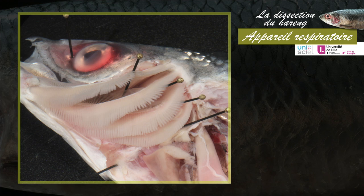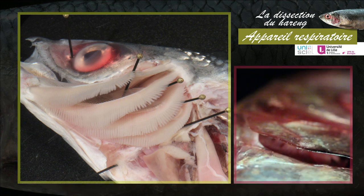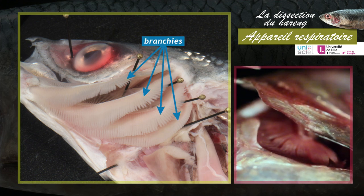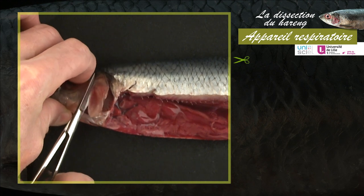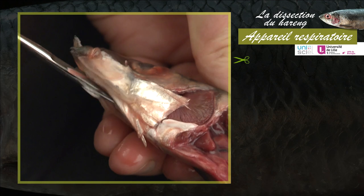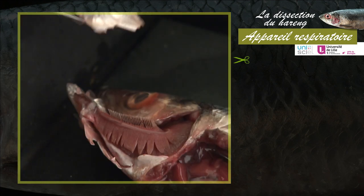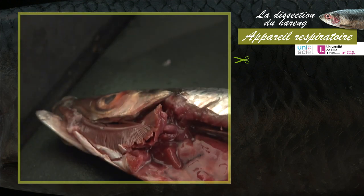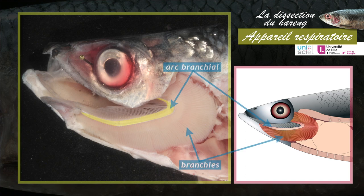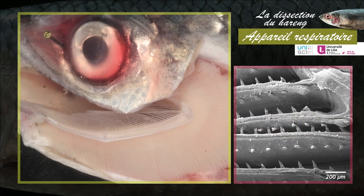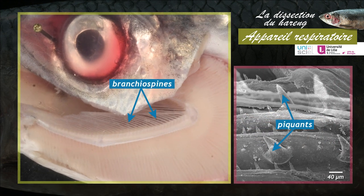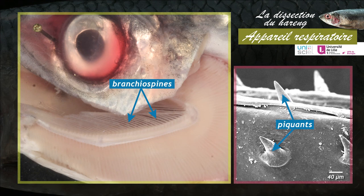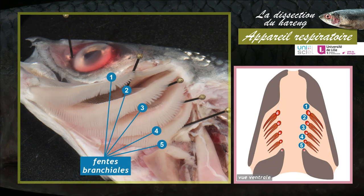Les téléostéens respirent avec des branchies situées dans la région postérieure de la cavité buccale au niveau du pharynx. Le hareng possède de chaque côté du corps quatre paires de branchies logées dans une cavité protégée par un opercule. Pour l'observation des branchies, il faut retirer à l'aide de ciseaux l'opercule, la mandibule gauche et la ceinture pectorale située à l'arrière des branchies. Chaque branchie est soutenue par un arc branchial osseux. Ces arcs possèdent des expansions osseuses, les branchiospines munies de piquants. Les arcs branchiaux délimitent cinq paires de fentes branchiales.